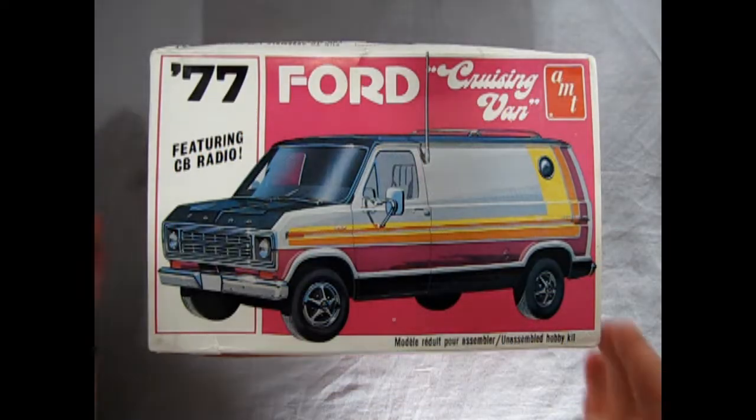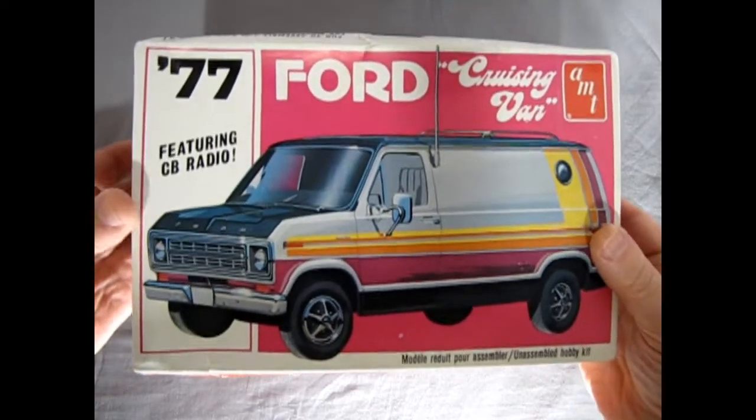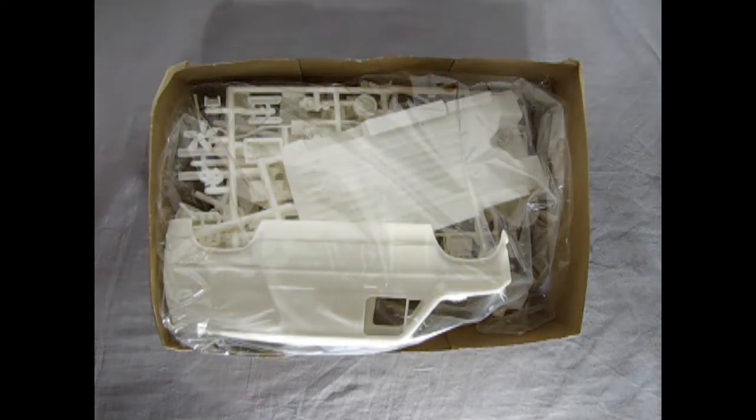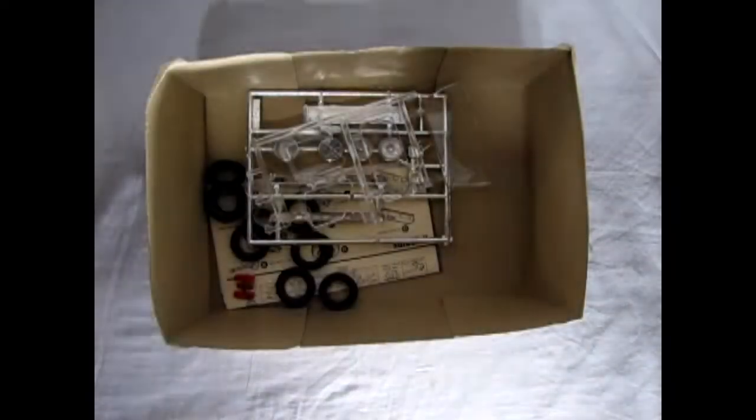So now let's remove the lid off our 77 Ford cruising van, and this is the very first time this lid has been off since 1977, so hopefully no ghosts or mice would fly out of it. At any rate, here's all our plastic components in a nice bag which we'll take a look at in a minute.